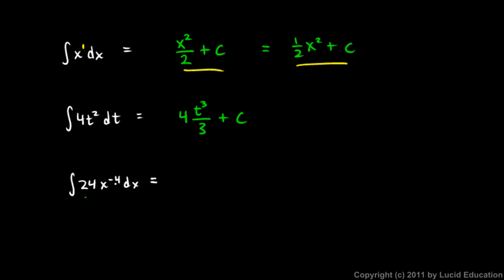Same concept applies down here. The integral of 24 times x to the negative .4 dx. So the 24 will stay, and then x to the negative .4. Well the exponent is negative .4, so we need to raise that by 1. Negative .4 plus 1 is .6. So this is going to be x to the power of .6 divided by the new exponent, which is .6. And this we should simplify. 24 over .6 is 40. So the answer is 40x to the .6 plus c.